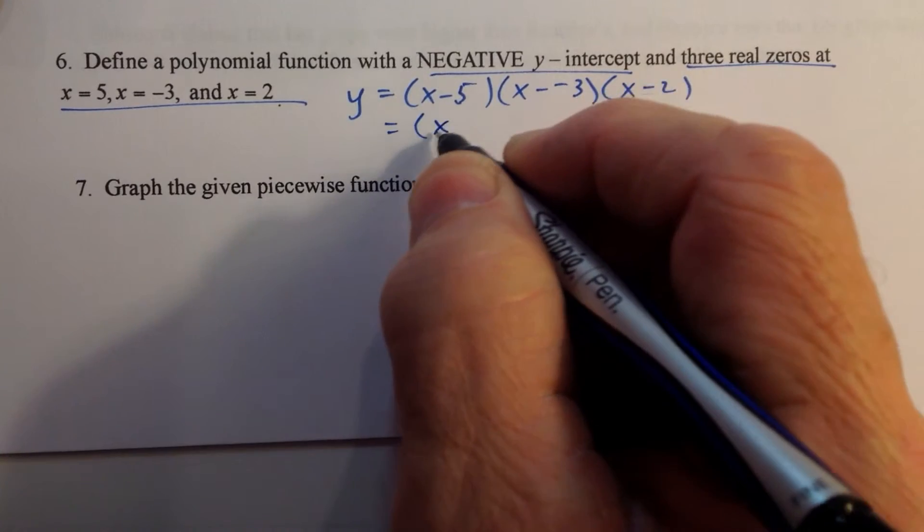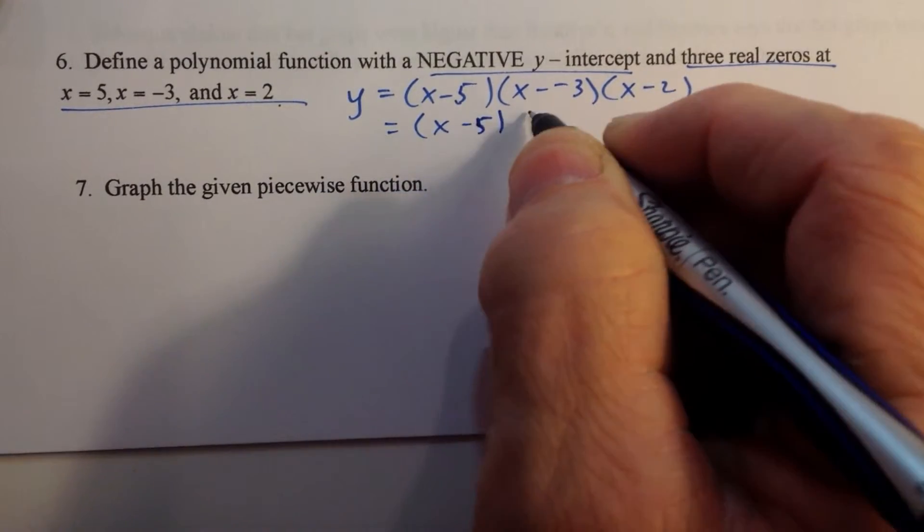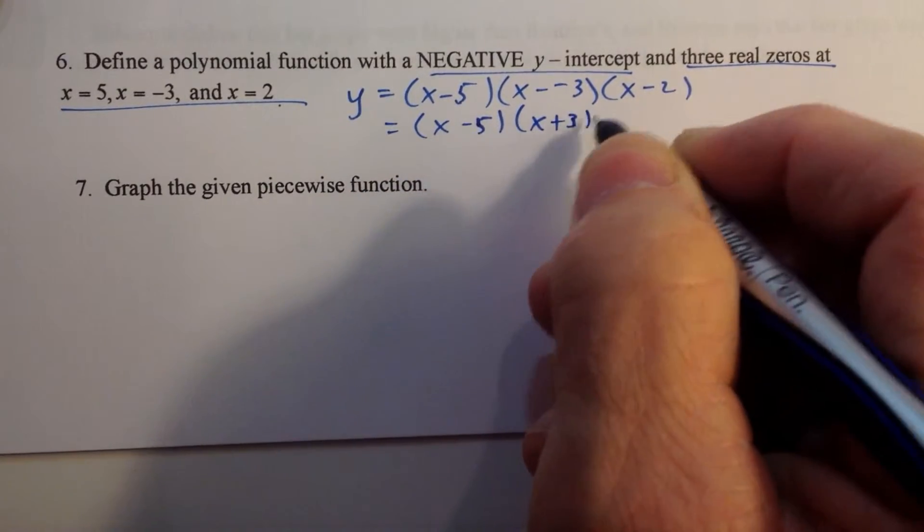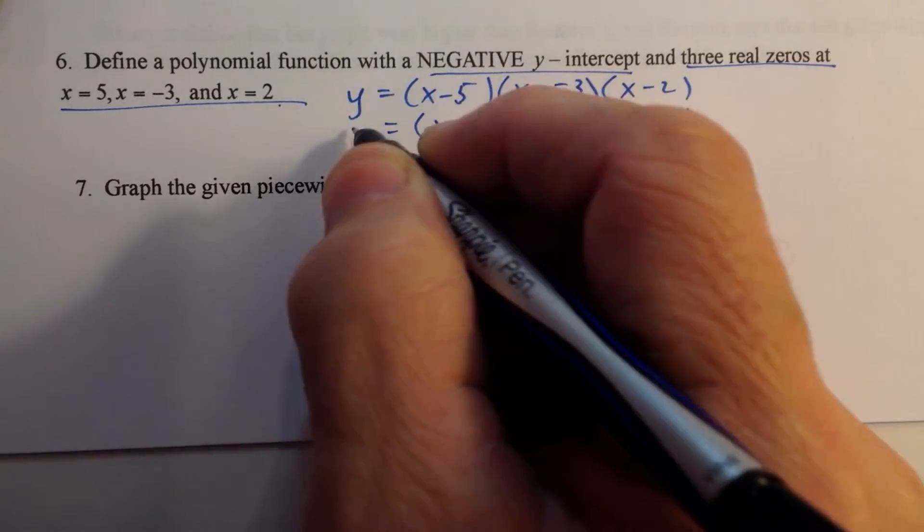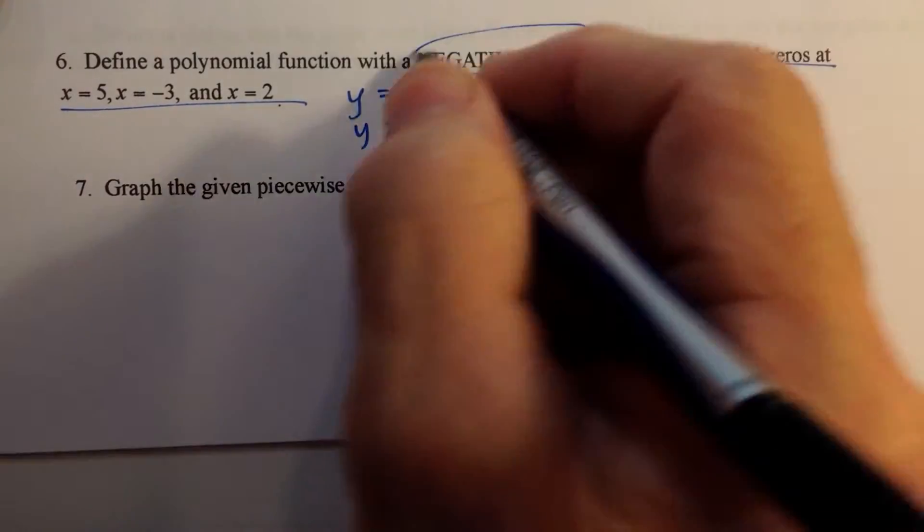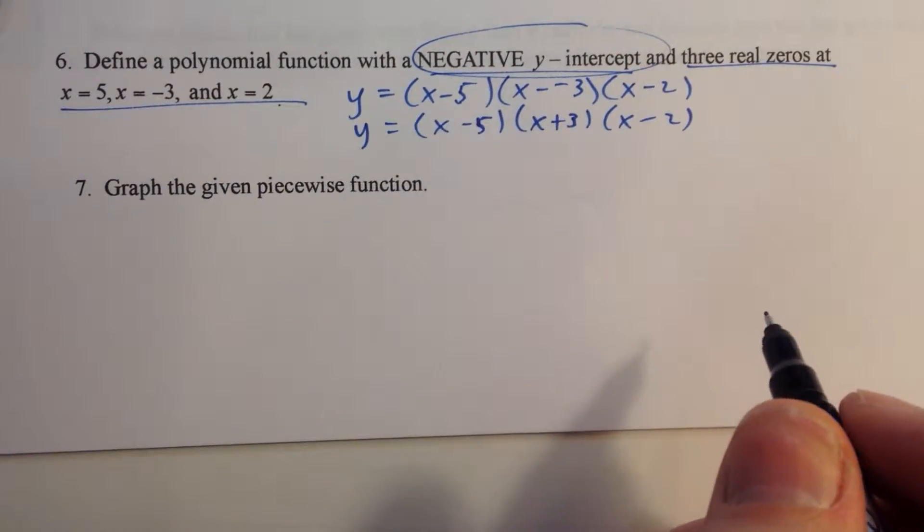We don't like to see that minus minus there, so we're going to write it as x minus 5 times x plus 3 times x minus 2. So there's our function, but let's make sure it has a negative y-intercept.